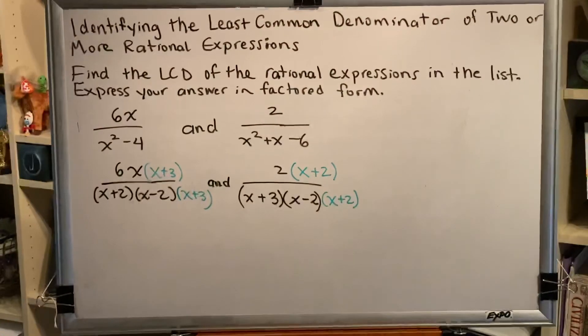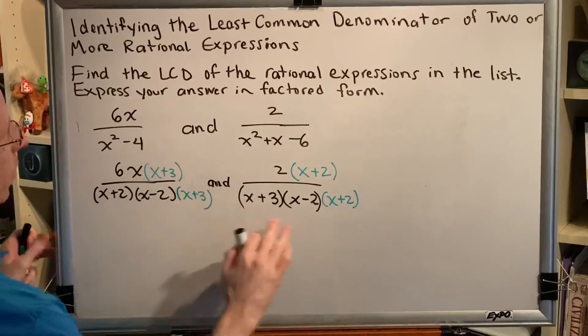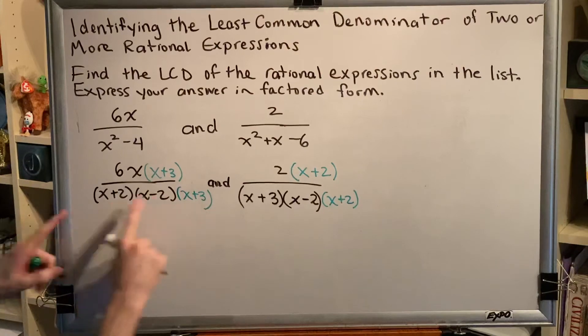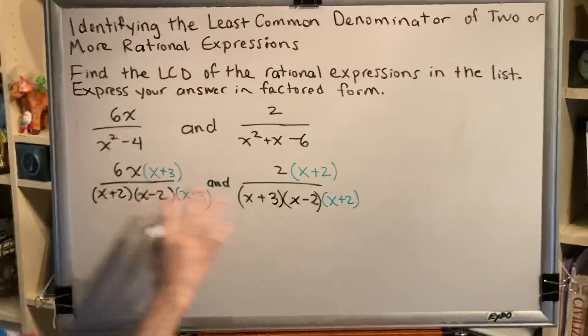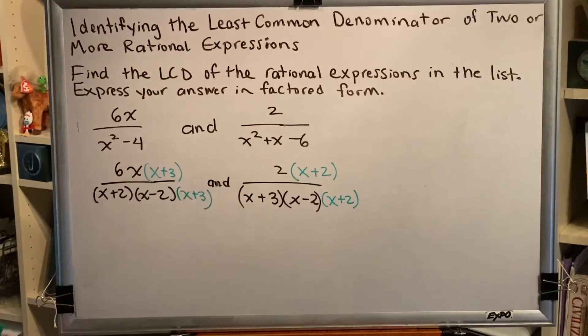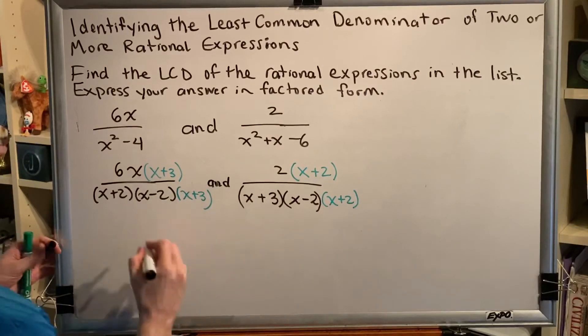Once you've done this, you can now see that the denominators match. They both have an x plus 2, an x minus 2, and an x plus 3. The fact that these are in a different order does not matter because multiplication is commutative and can be done in any order.